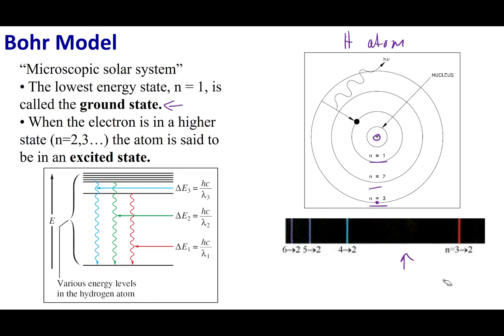Going back to our line spectra, now we can make sense of why these lines appear. These lines correspond to an emission of light — the drops or jumps an electron makes. Because the light is coming out of my hydrogen lamp, these correspond to energy drops. A drop from n equals 3 to n equals 2 emits a photon of red light. That energy gap between n equals 3 and n equals 2 is a fixed, quantized amount — which is why we see only one line and not a range of colors.